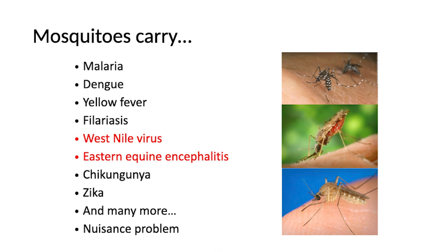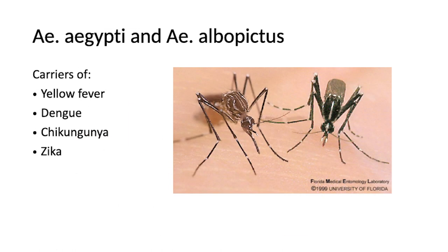Mosquitoes carry a host of different diseases and are also a big nuisance problem in high numbers. Today I'll focus on West Nile virus and eastern equine encephalitis because those are the two diseases we screen for in Massachusetts. I'll also mention two non-native species — Aedes aegypti on the left and Aedes albopictus on the right, a black mosquito with a white stripe down its back. Both can carry tropical diseases as well as West Nile virus and are very aggressive human biters, so we're monitoring their spread. We've only found one Aedes albopictus in our county so far, but it is established in other areas of Massachusetts.